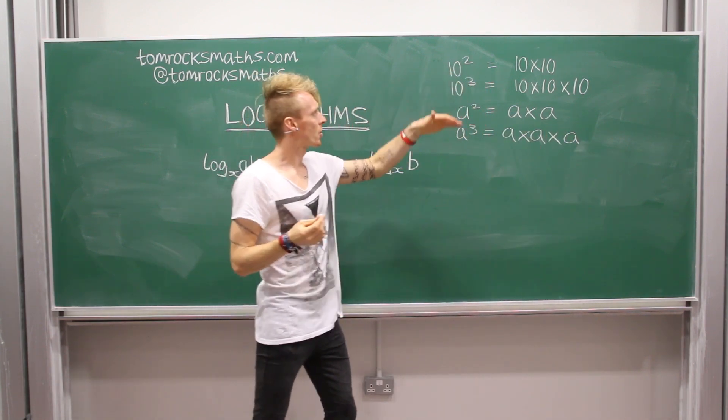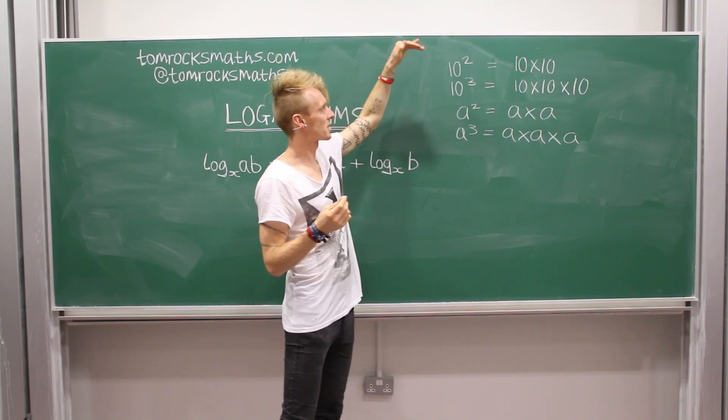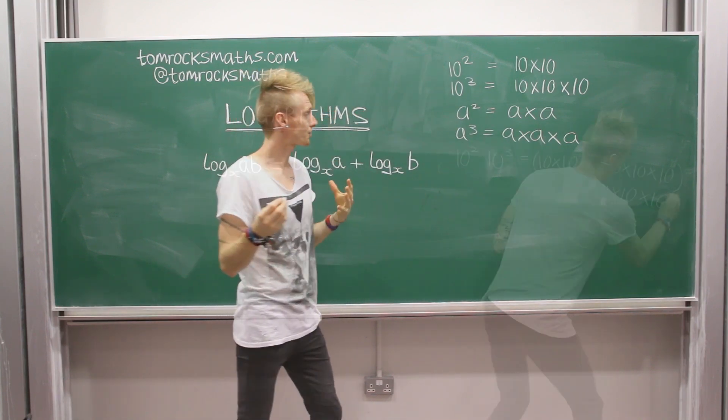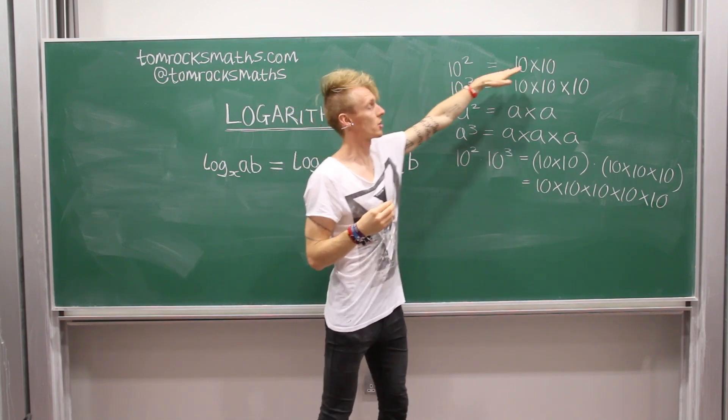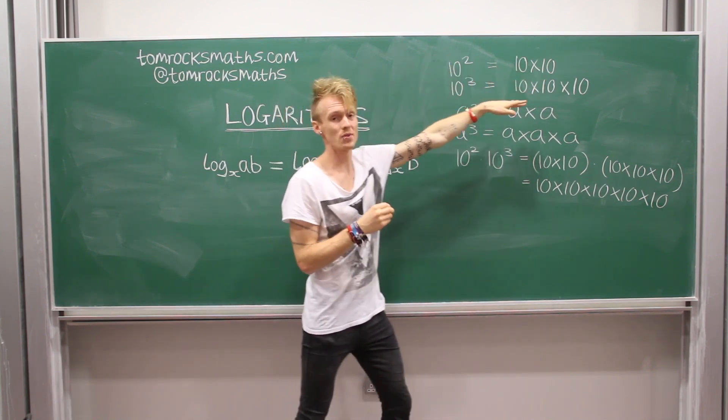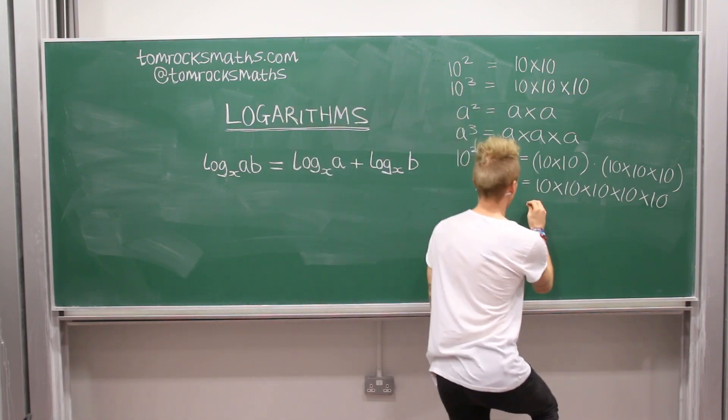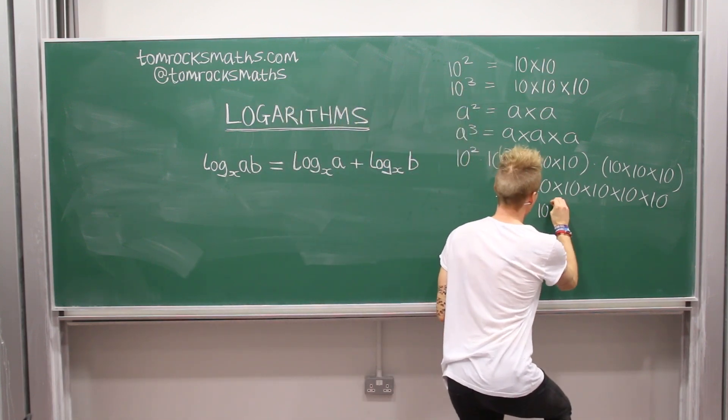Now, what happens if we do 10 squared times 10 cubed? Writing this in shorthand, in the same way that two 10s is 10 squared and three 10s is 10 cubed, here we have five lots of 10, and so this is just 10 to the 5.